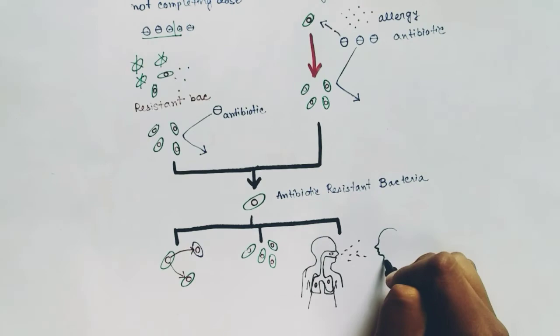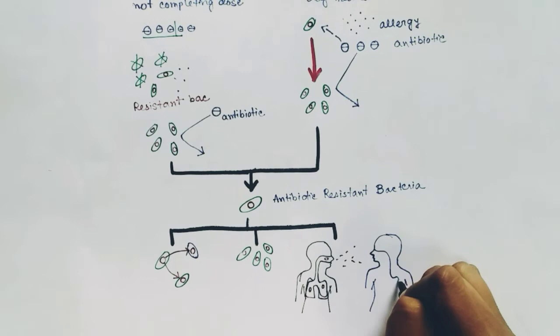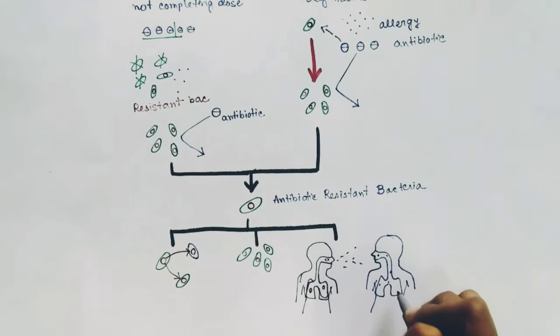So another human being also has that resistant TB bacteria inside him. When he gets TB, it will be drug-resistant TB and it will be very difficult to treat. This is how resistant bacteria can also transfer from one human to another.